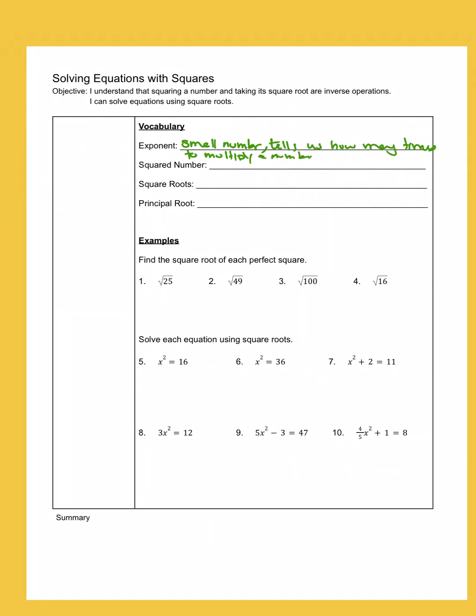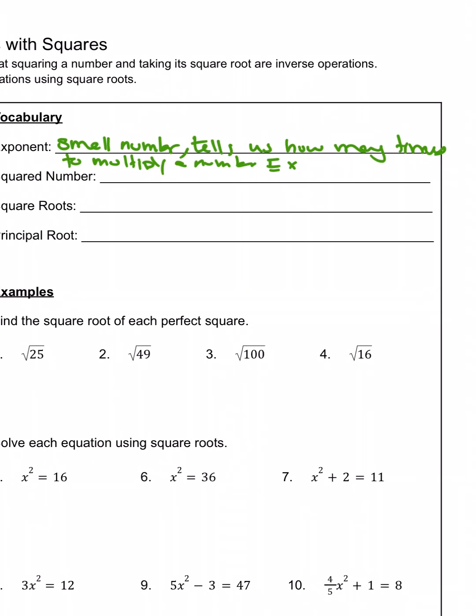For example, if we have 3 to the second power, that tells me I'm multiplying the number 3 two times, because the exponent is 2. So 3 to the second power, or 3 squared, means 3 times 3, which is 9.